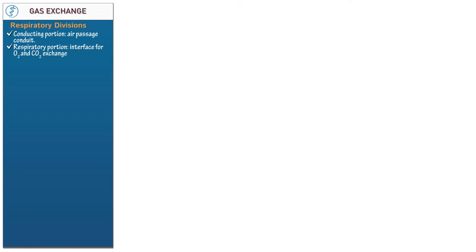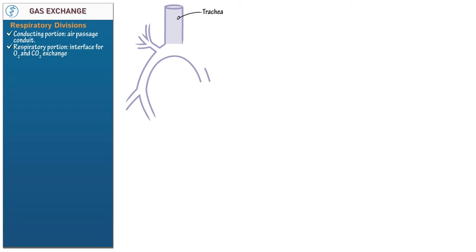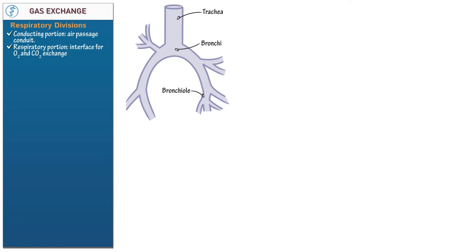Begin with the conducting portion. Draw a trachea. Show it branch into left and right bronchi, which descend into the left and right lungs respectively. Show that within the lungs, the bronchi branch into bronchioles. Multiple bronchiole subtypes exist; we'll only cover one here.